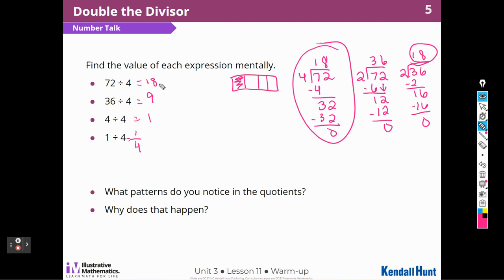What patterns do you notice in the quotients? Well, I notice that they get smaller and smaller. Why does that happen? Remember that there is half as many to start with. When the dividend is split in half, this is split in half. There are half as many to start with, so there will be half as many in each group.